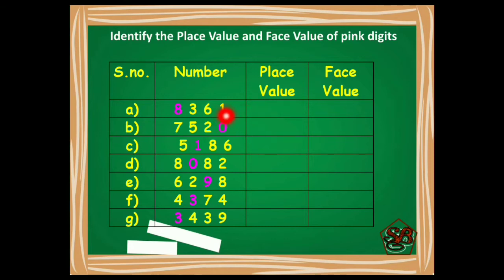Starting from here we will count 1's, 10's, 100's, and 1000's. So 8 is at 1000's place. The pink digit is at 1000's place, so its place value is 8000 and the face value will be 8 only as it appears.